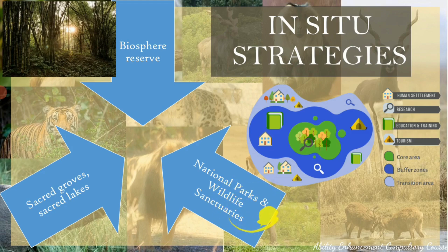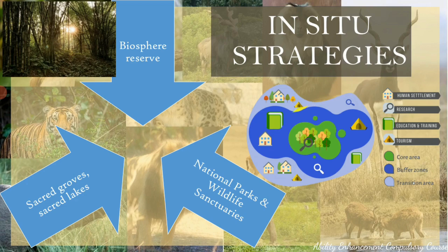The second type under in-situ conservation strategy is having national parks and wildlife sanctuaries. As of 2022, there are 106 national parks and more than 565 wildlife sanctuaries in India. The difference is that national parks aim at protecting the ecosystem and are much larger, whereas wildlife sanctuaries are aimed at protection of animals and are slightly smaller, but both equally serve the purpose of conservation. Examples in Karnataka include Bannerghatta National Park in Bangalore, Bandipur National Park, Nagarhole, and Kudremukh. Ranganathittu Bird Sanctuary is a wildlife sanctuary close to Bangalore.